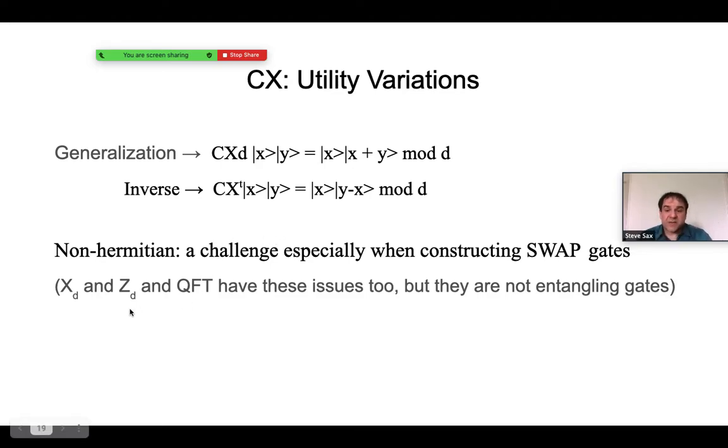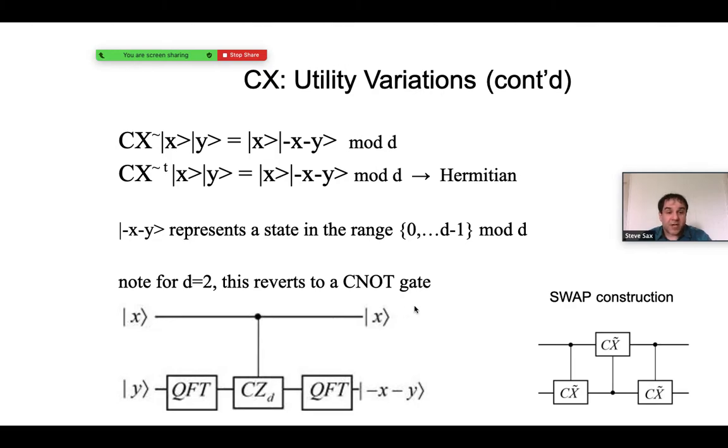We actually have the same issue with the shift phase and quantum Fourier transform gates. But the reason why it's a bigger challenge here is because we would like to use these gates to construct other gates, like the swap gate, analogously to the way CNOT gates can be used to construct a swap gate. To overcome this challenge, we can look at a variation.